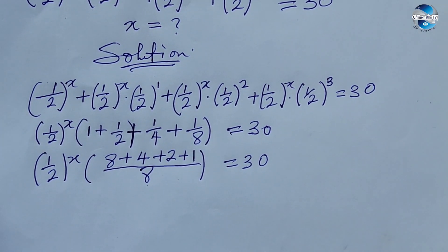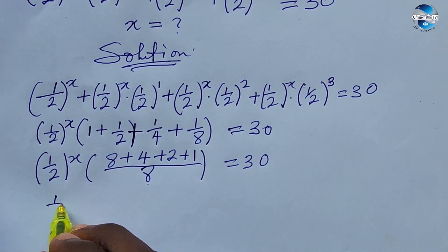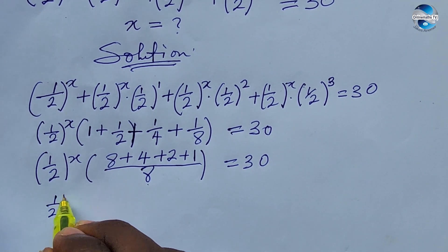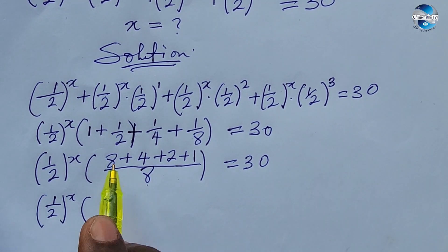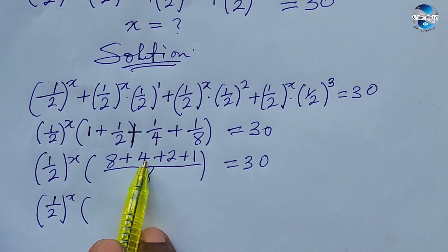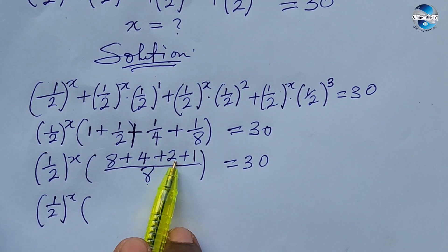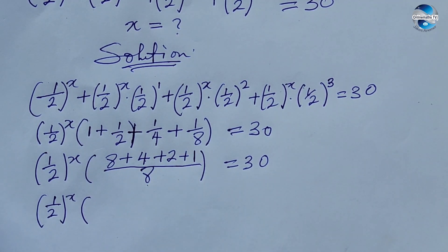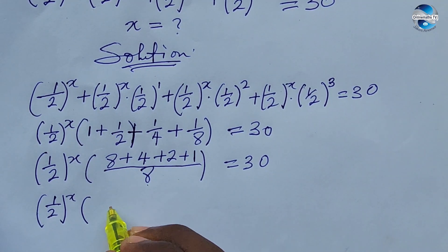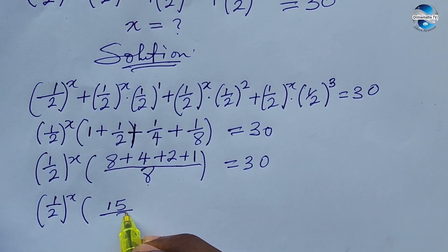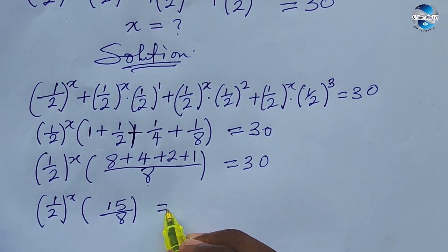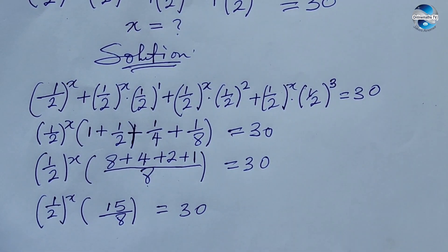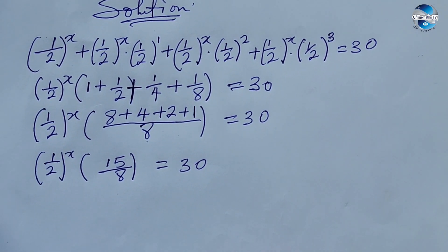So we now have (1/2)^x times the bracket. Adding inside: 8 + 4 = 12, plus 2 = 14, plus 1 = 15. So we have (1/2)^x times 15/8 equals 30.